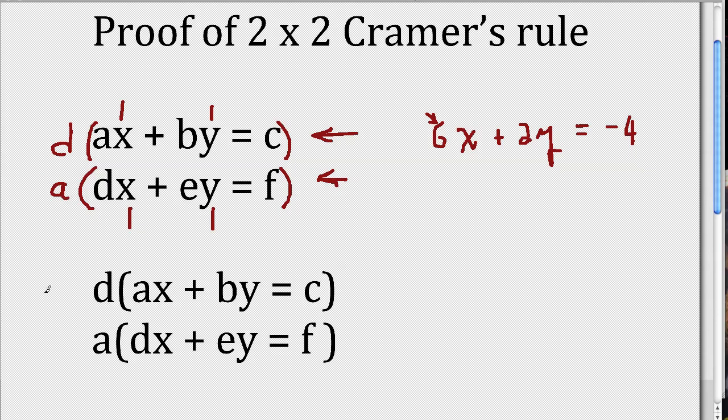And I do that here below. So this is multiplying both sides of the equation by D, and here is multiplying both sides of the second equation by A. So I have D times AX plus D times BY is equal to D times C. And this down here means A times DX plus A times EY equal to AF.